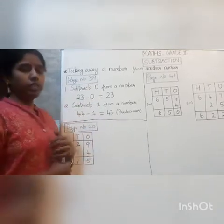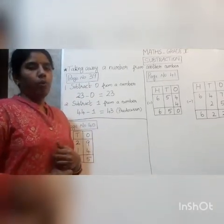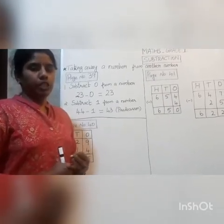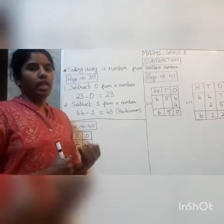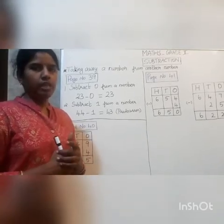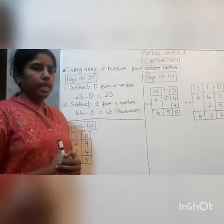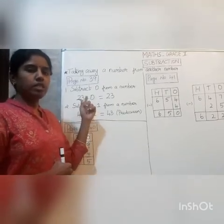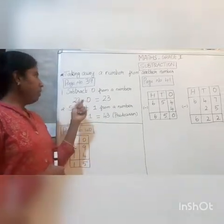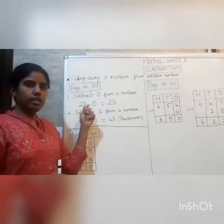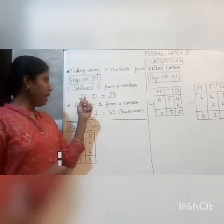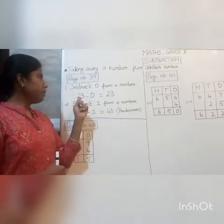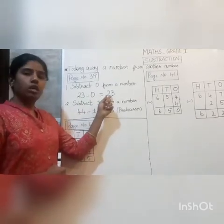In page number 39, first we have the properties of subtraction, where there are three properties given. The first one is: in subtraction, the bigger number should be first and then the smaller number should be next. The second property is subtracting 0 from a number. As we all know, 0 means nothing, so if we take away 0 from any number we get the same number as the answer. For example, 23 minus 0 is 23.